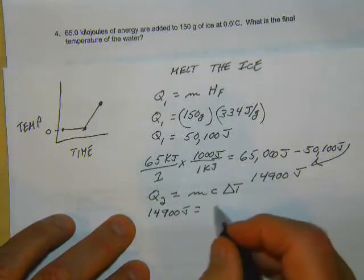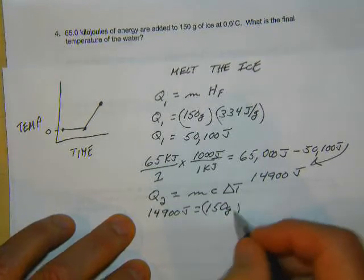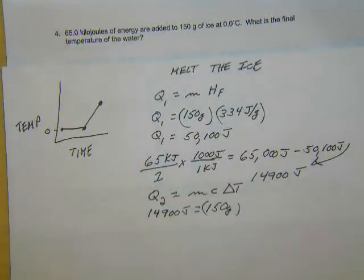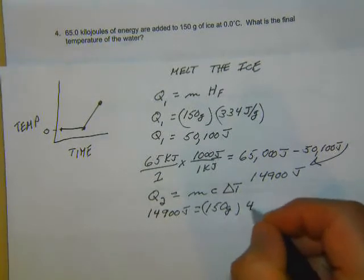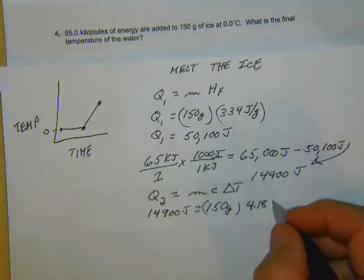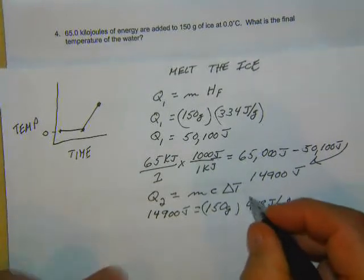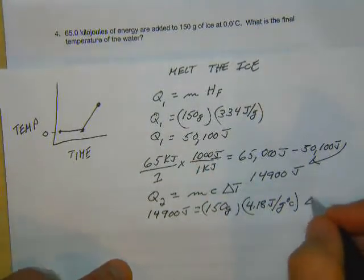The mass isn't going to change. 150 grams. And now we can use the specific heat capacity of liquid water, which is 4.18 joules per gram degree Celsius. But we don't know what delta T is.